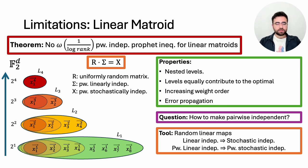Finally, we state our main result as a theorem: there is no way to achieve strictly better than O(1/log rank) compared to the prophet in pairwise independent prophet inequality for linear matroids.